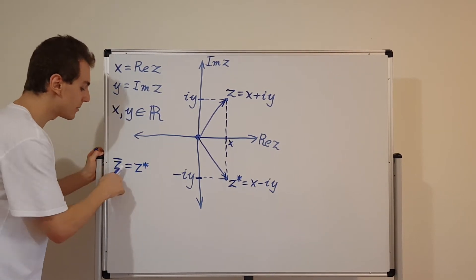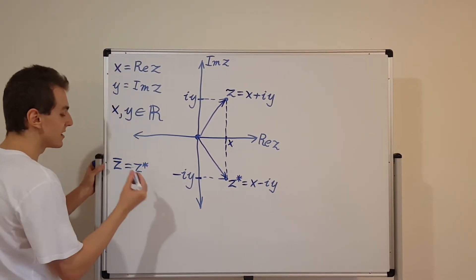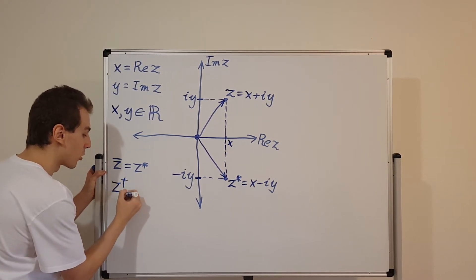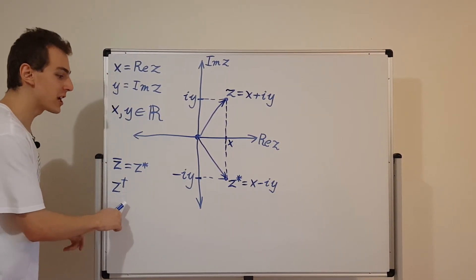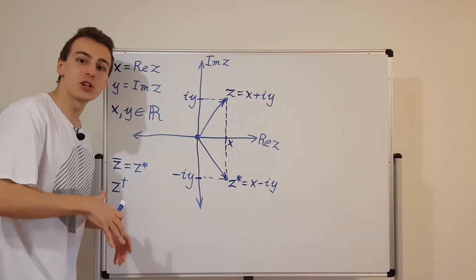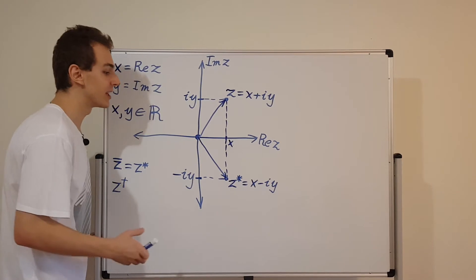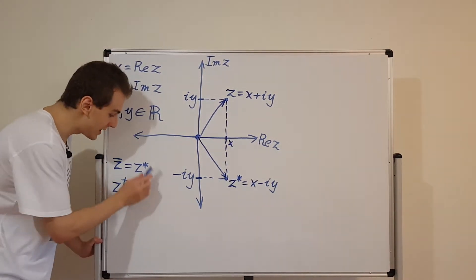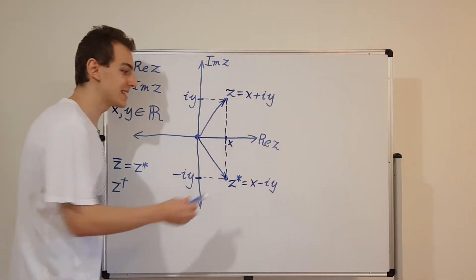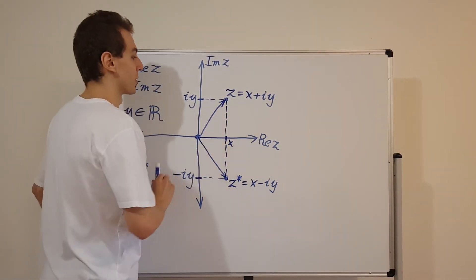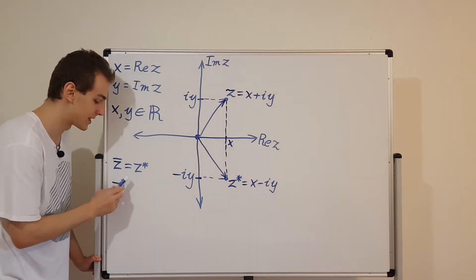Because sometimes bars are going to be used for different things and sometimes stars are going to be used. Another notation you might also see — more if you have matrices and you're taking the Hermitian conjugate — is this little cross, like a dagger on top. This dagger is also the same as complex conjugating, but it's not complex conjugating a number — it's complex conjugating a matrix. If you complex conjugate a matrix, you can't just take the complex conjugate; you have to also take the transpose. We won't go into details of matrices yet — that's going to be in later videos. But just note that these notations are all describing a similar process: taking the complex conjugate.